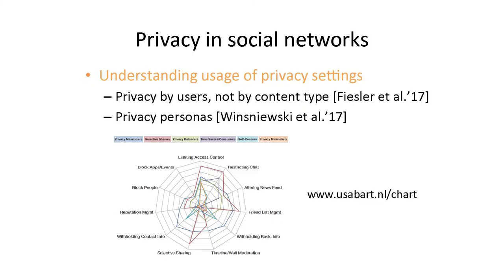There is also work on understanding how people currently use their privacy settings. For example, work by Fiesler and co-authors shows that users are usually private by person rather than by content type — you don't mark certain types of content as private and others as public; instead, you tend to make everything private or everything public. There is also recent work identifying privacy personas based on privacy settings, such as 'privacy maximizers,' who withhold contact information and basic information but may not be as concerned about other things.